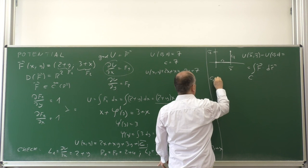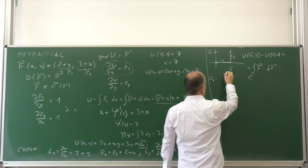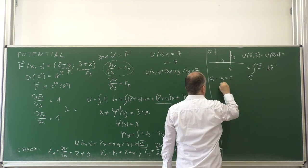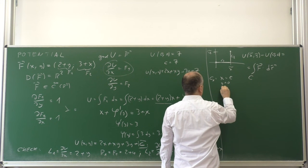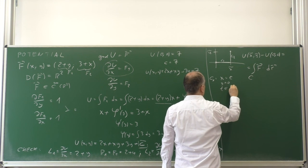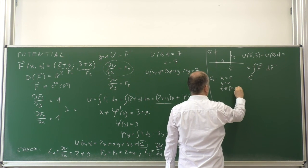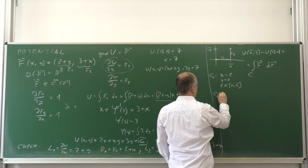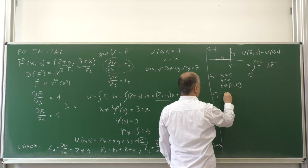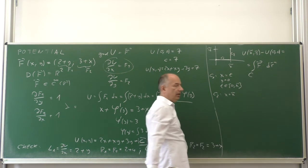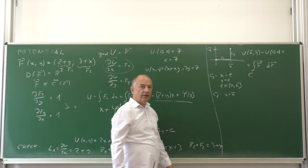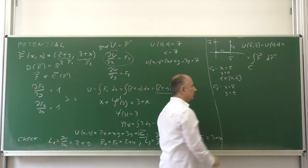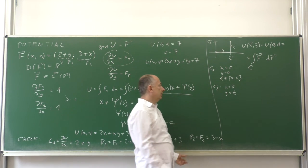We want parametric equations. C1 can be parameterized by x is t, y is 0, and t runs from 0 to x tilde. And the second part C2 can be parameterized by x is x tilde, the constant final value of x, and y grows from 0 to y tilde.